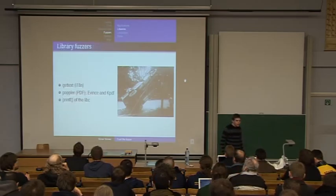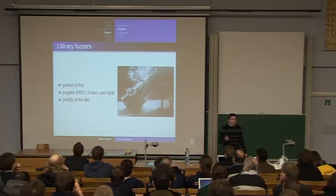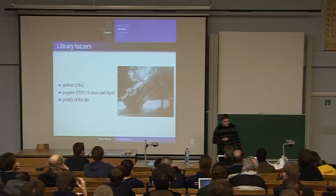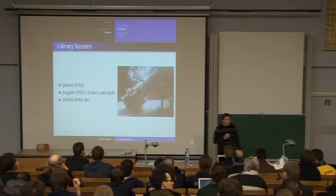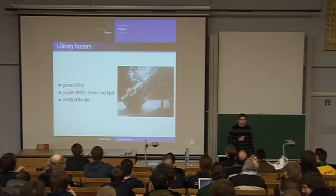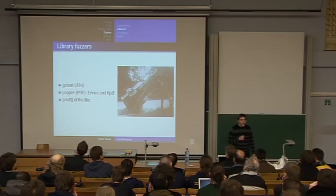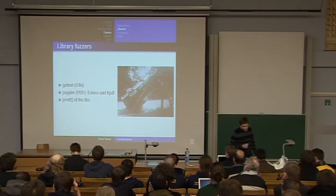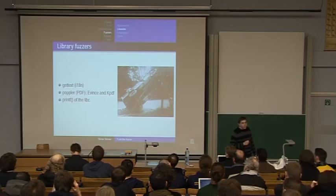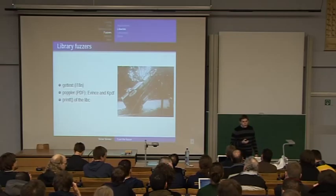I also have a fuzzer that targets libraries like GetText. GetText is a library to translate English to any language. I like this fuzzer because it works very fast and always crashes the program. There is also Poppler, a library to display PDF documents, used by Evince and KPDF. And finally, there is also a printf fuzzer that generates random calls to printf with valid data and valid format strings, to make sure that printf works correctly.